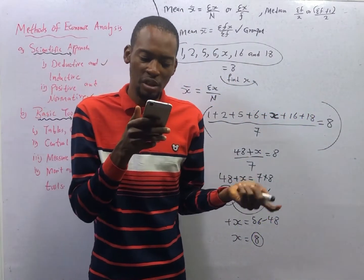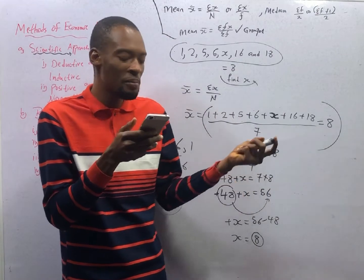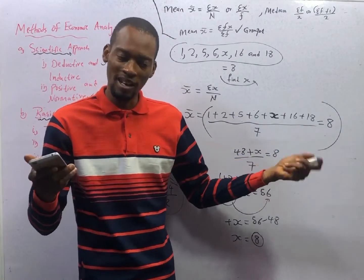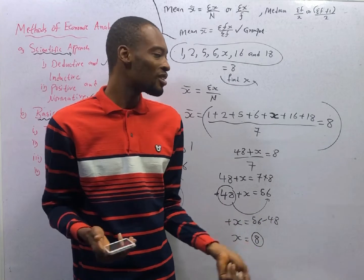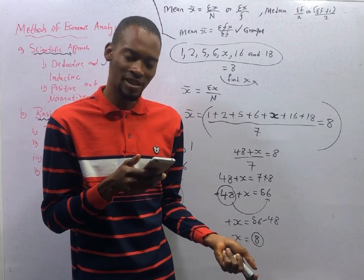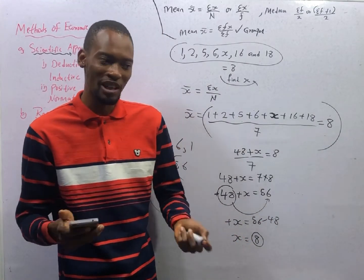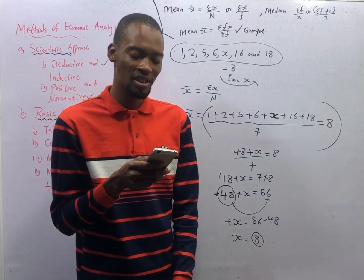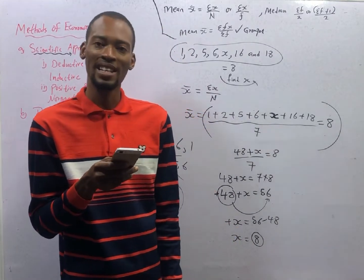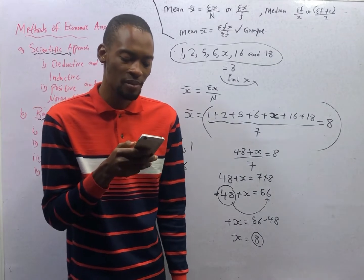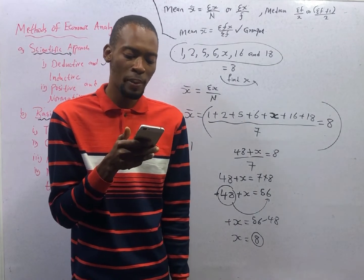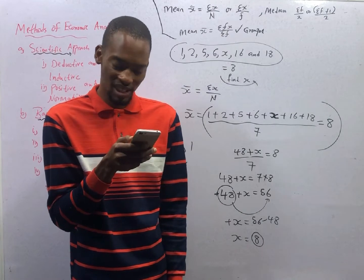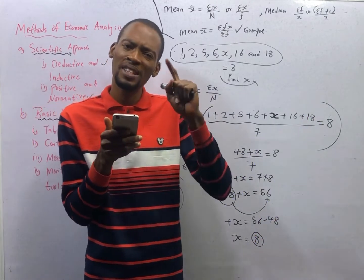The most popular sizes of dresses and shoes are determined by the mode. Mode is the most popular number — the number that appears the most. So the most popular sizes of dresses are the ones you see the most, the ones with the highest frequency. Mode is used to determine popular sizes. And the median of an odd number set of scores is the middle value in the set.